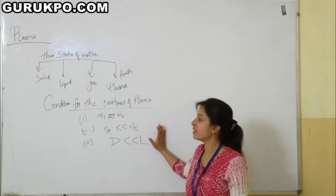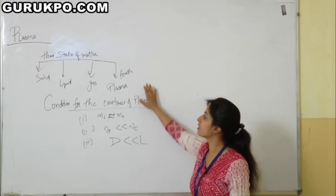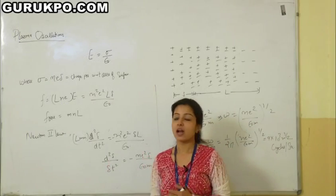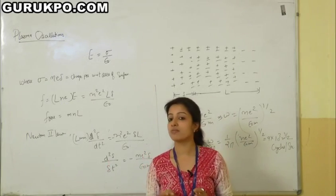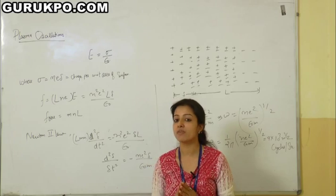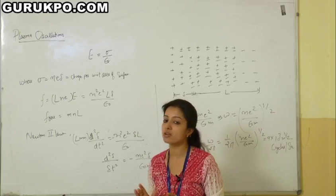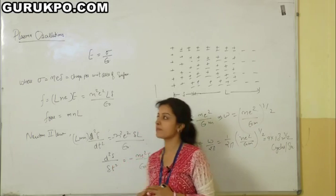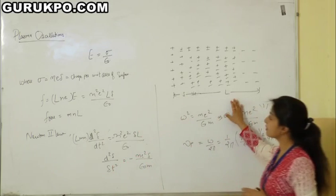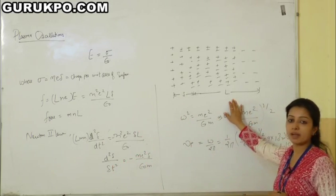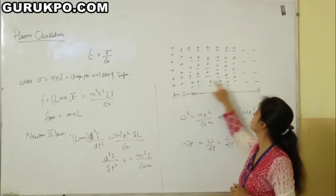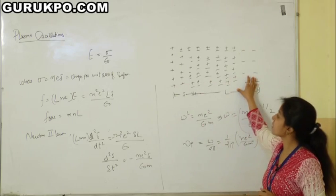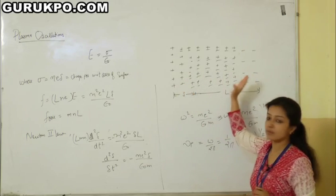These are the three conditions for the existence of plasma. Plasma is widely spread in the universe and it is the fourth state of matter. In plasma oscillation, the most important aspect of collective motion is the bulk oscillation of plasma electrons with respect to the ions. Here is the diagram representing the plasma containing positive ions and electrons which are slightly displaced from their places.